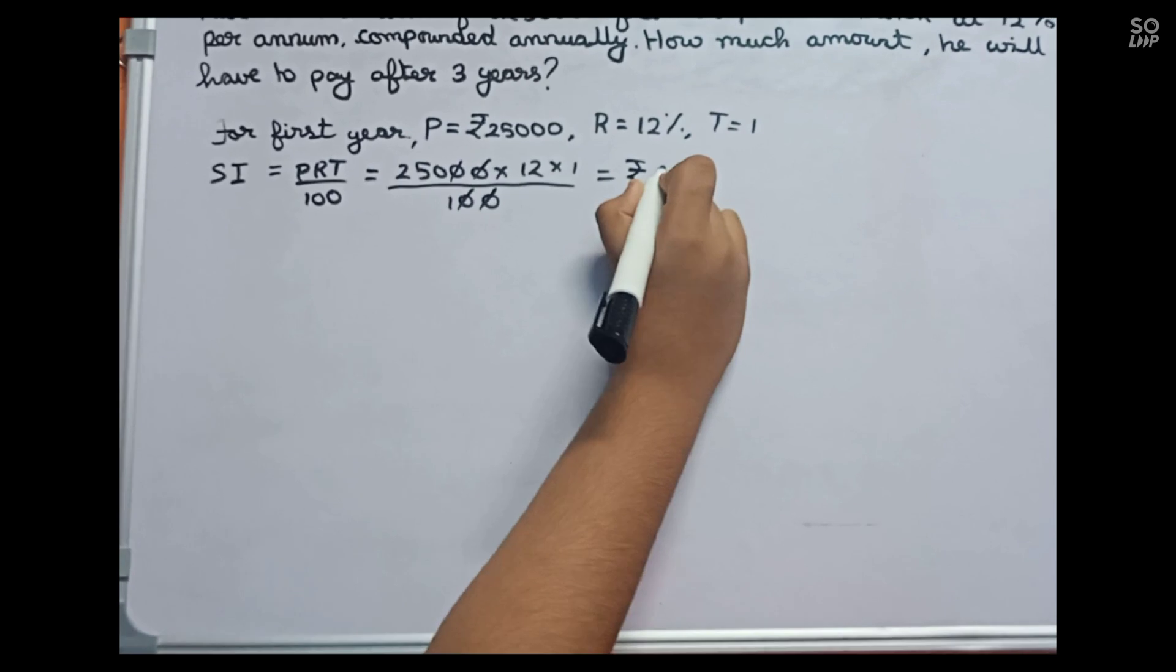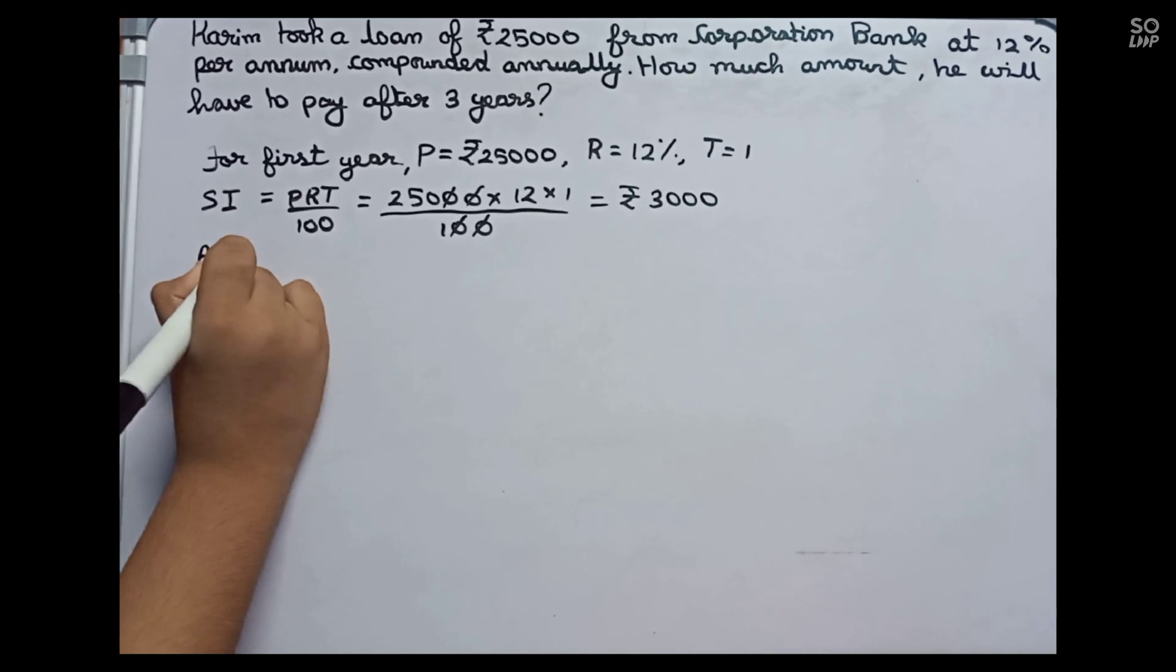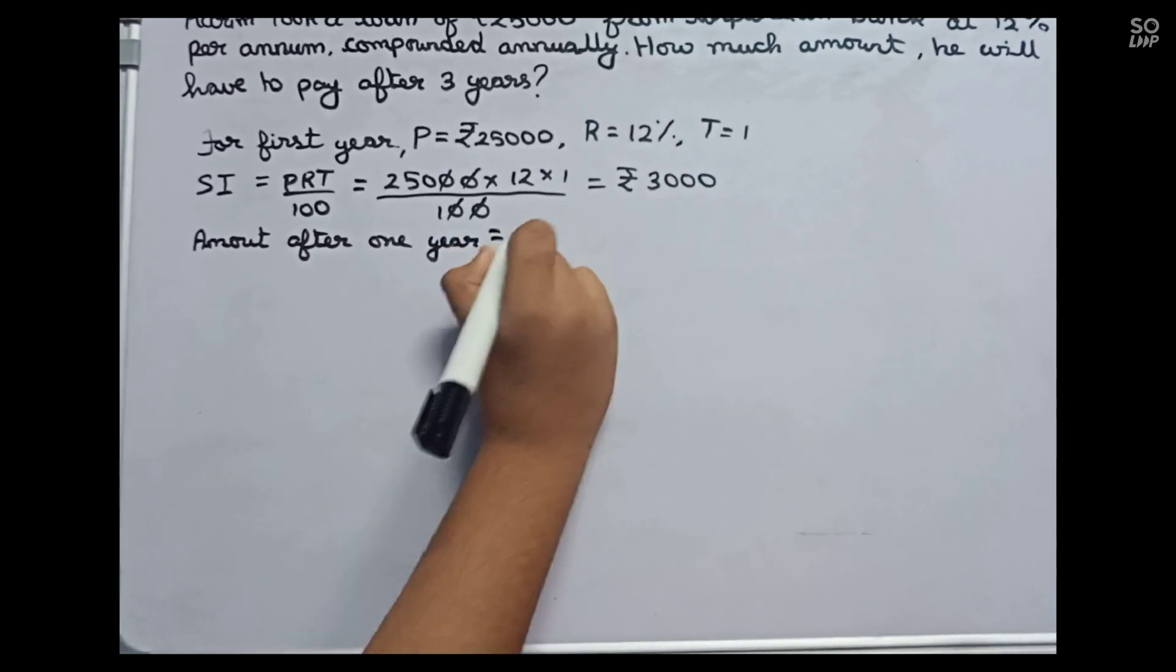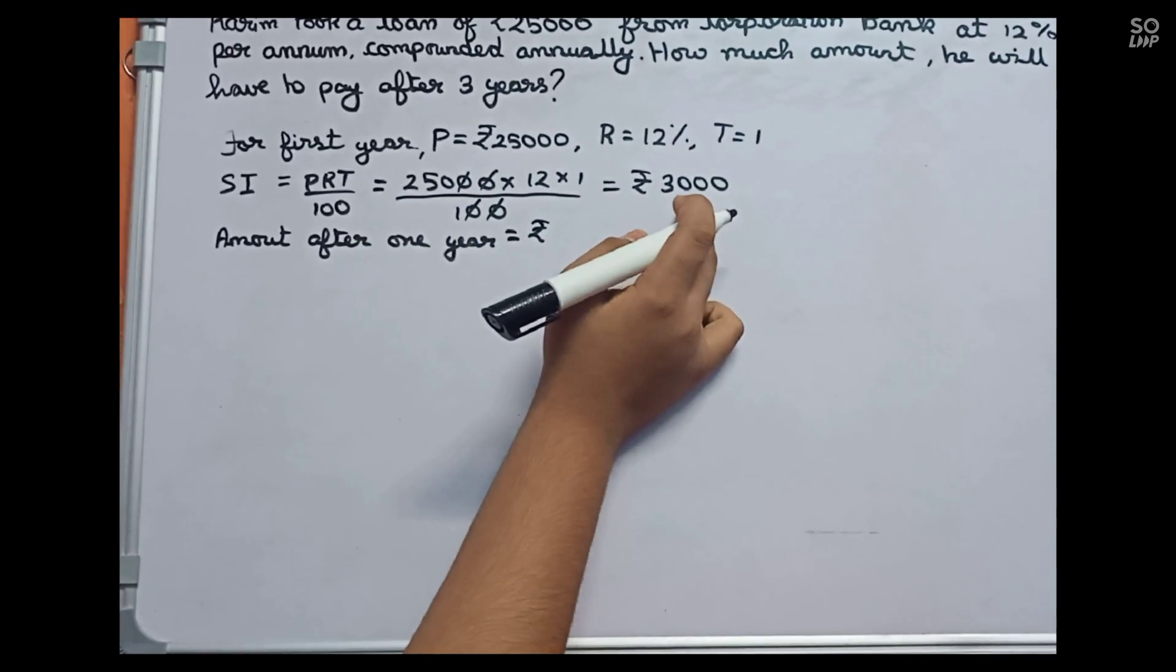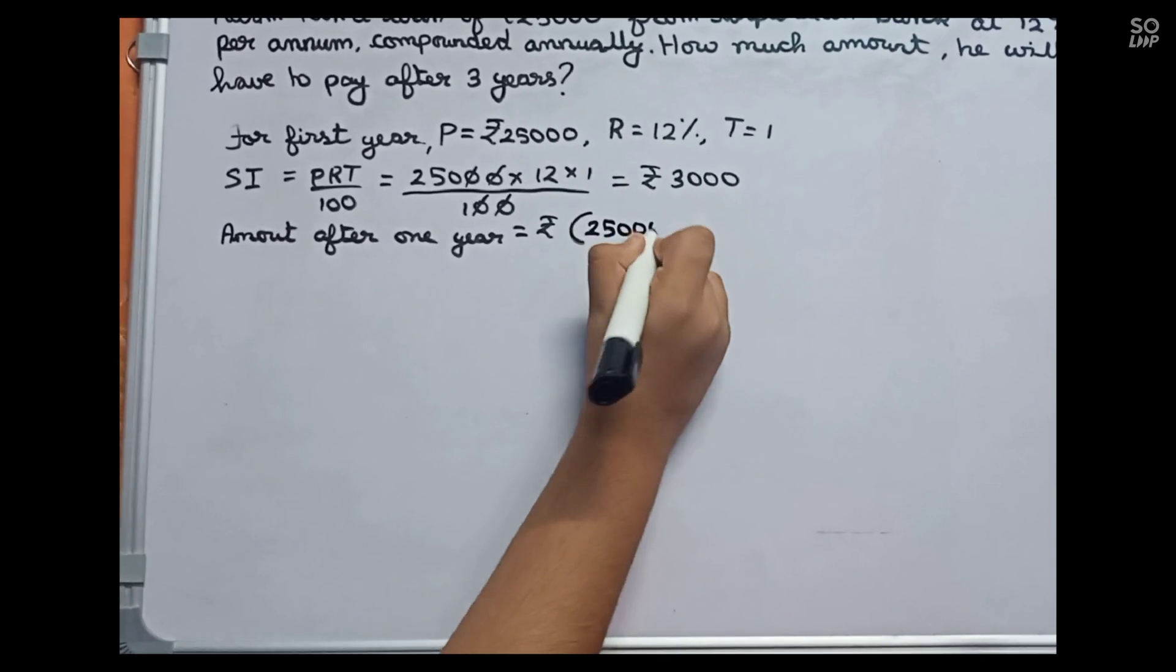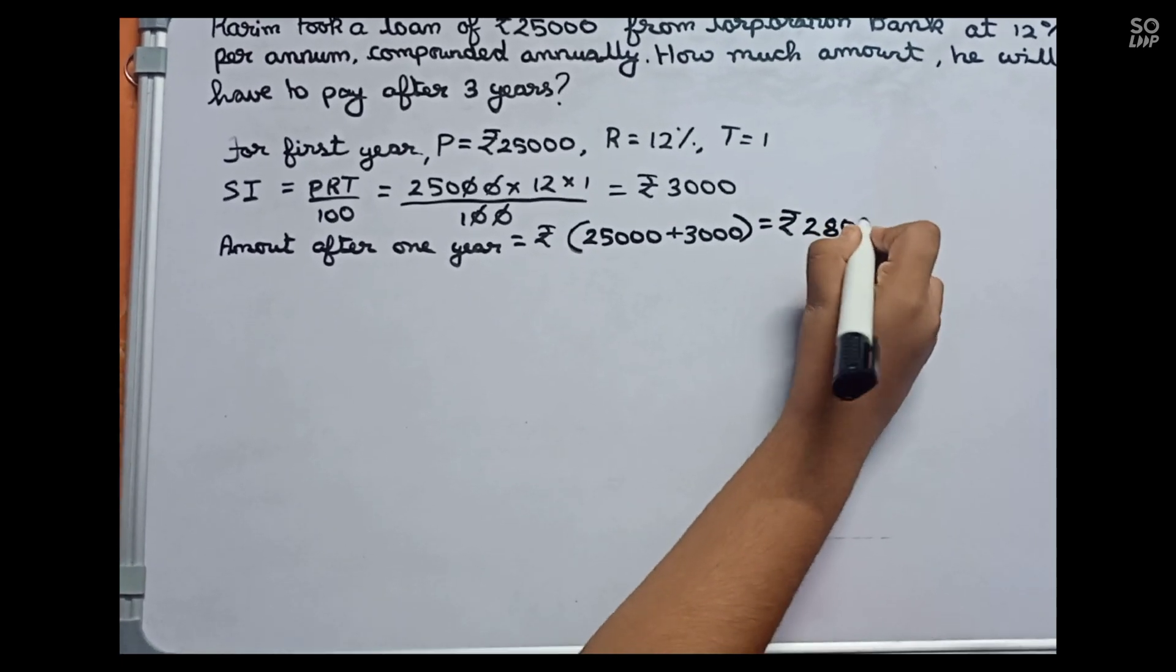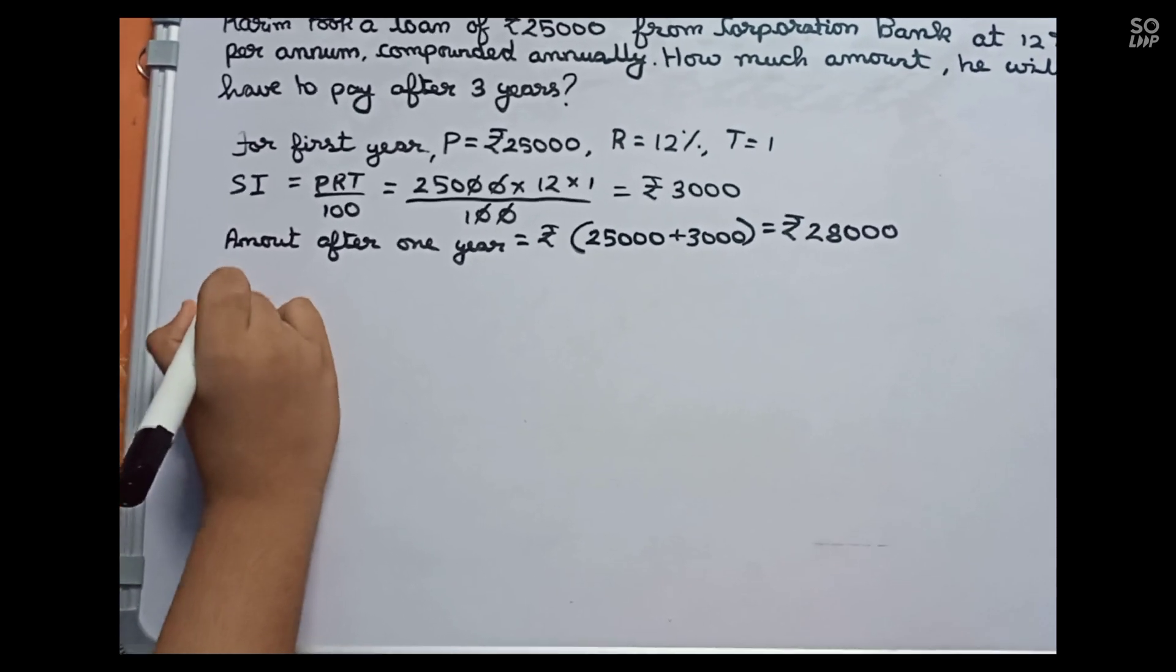So it becomes rupees 3,000. I find the amount after one year equals to principal plus the SI, so it becomes rupees 28,000.